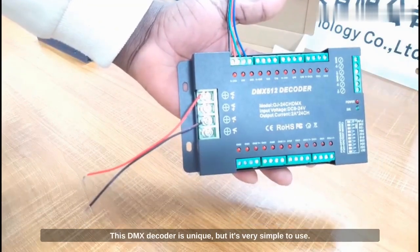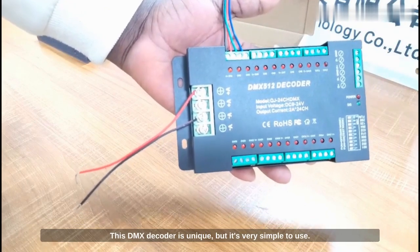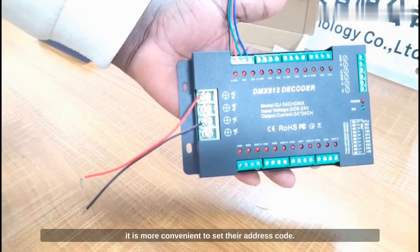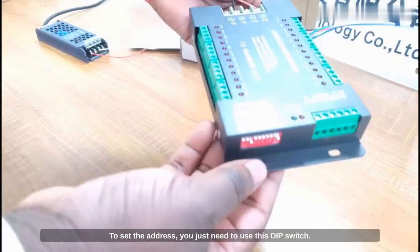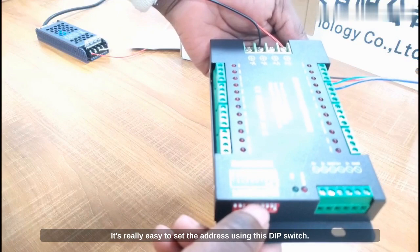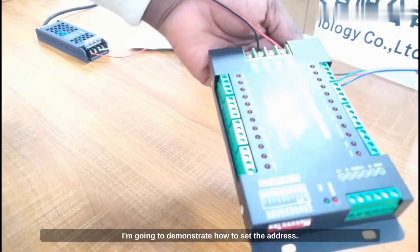To use this DMX decoder, it's unique but very simple to use. One of the advantages of this DMX decoder is that it is more convenient to set the address code. To set the address, you just need to use this DIP switch. It's really easy to set the address using this DIP switch. I'm going to demonstrate how to set the address.